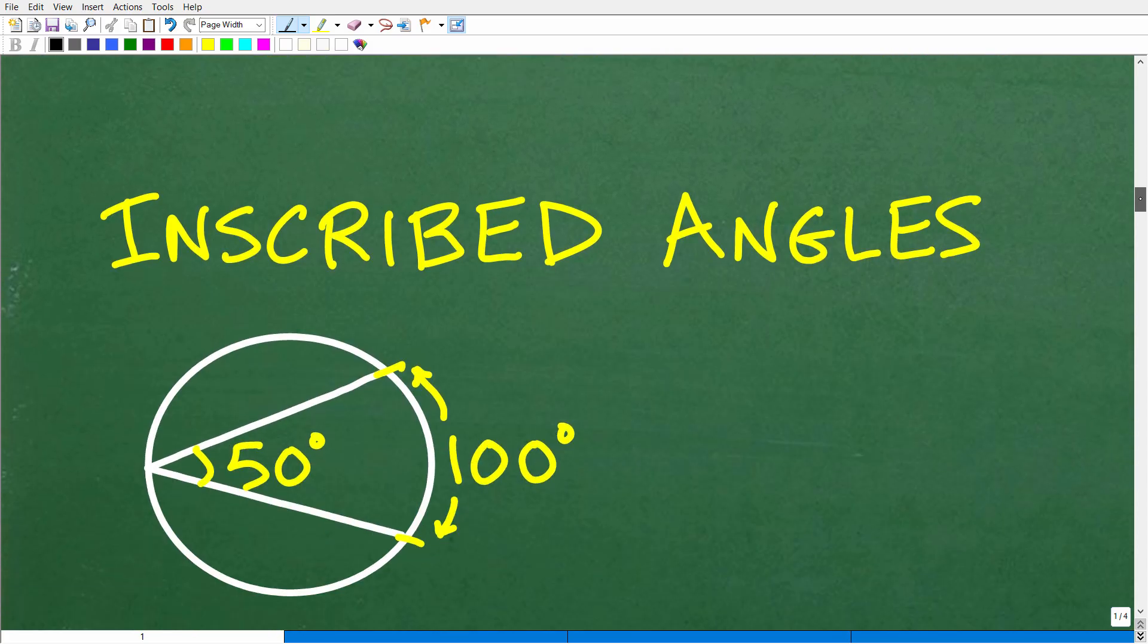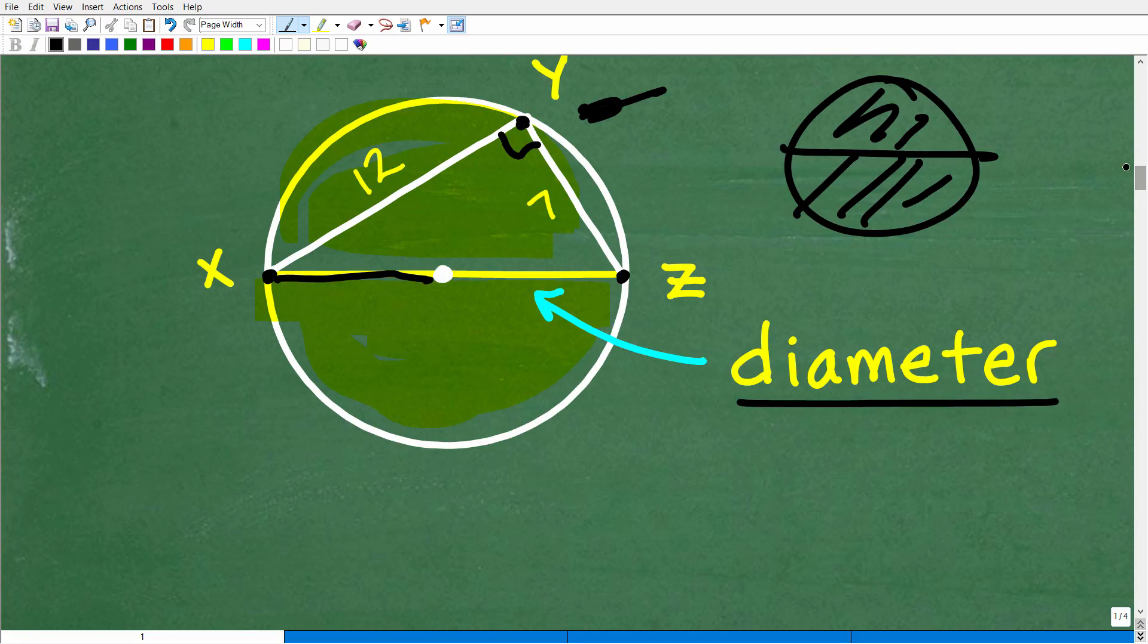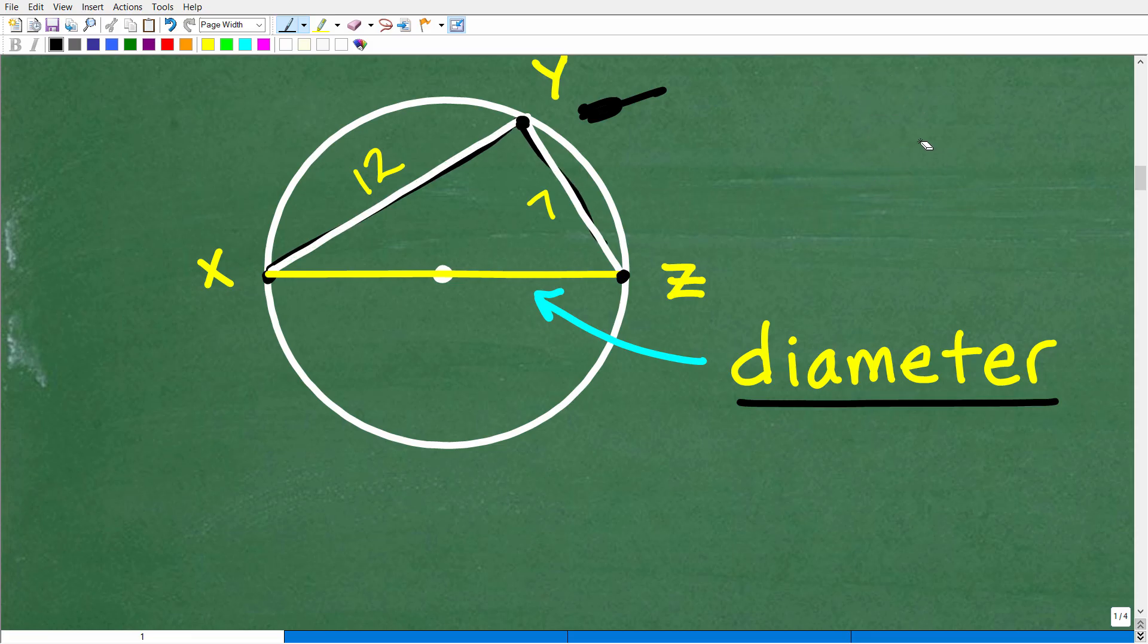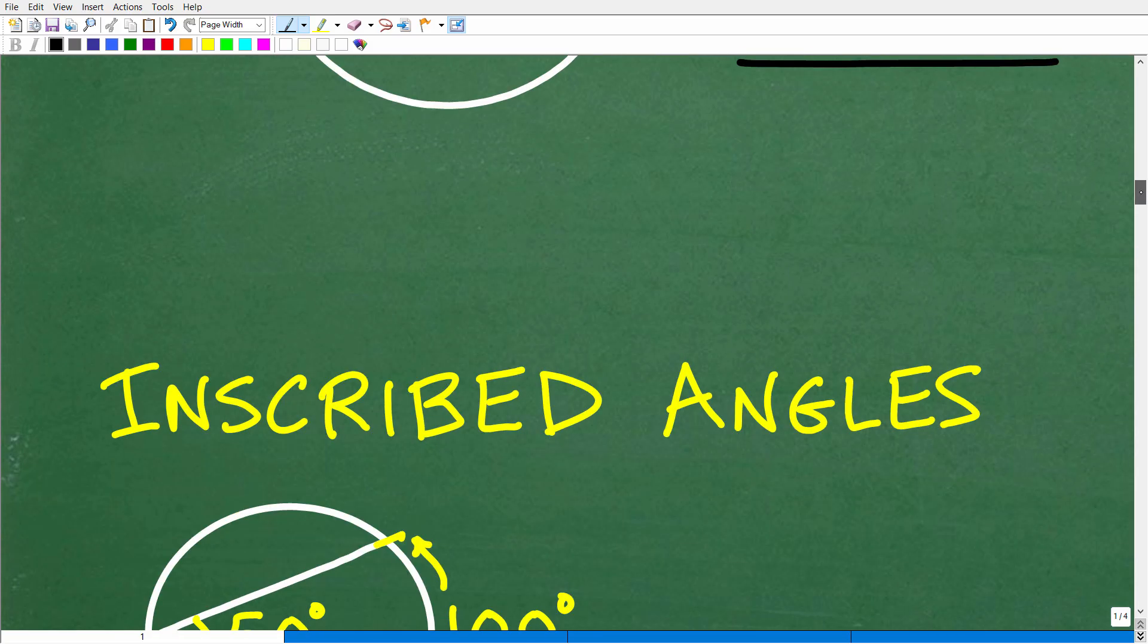Really what we're talking about here is something called inscribed angles. Let's go back to this figure and see why we are dealing with an inscribed angle. Let's just forget about the diameter for a second and focus on this part right here—the edges of the triangle. These two sides, the 12 and the 7, really could look like this. So what we have is an inscribed angle inside of a circle.